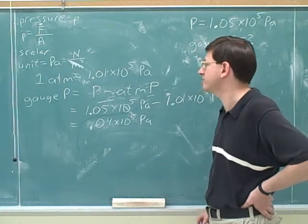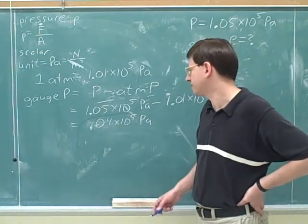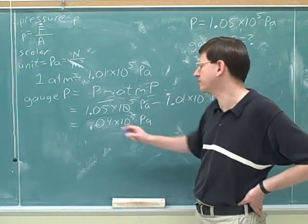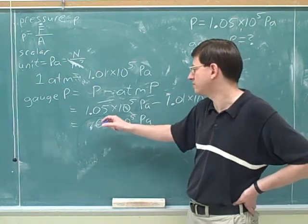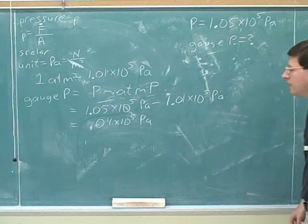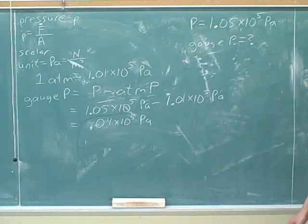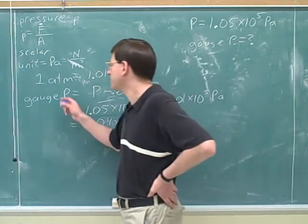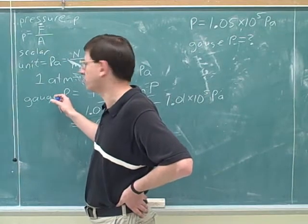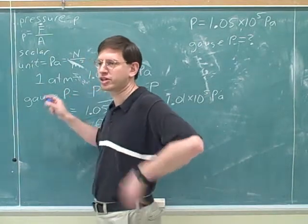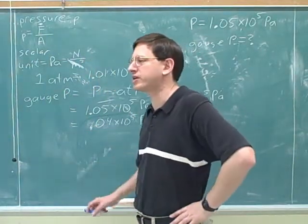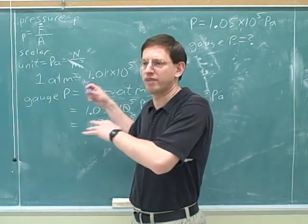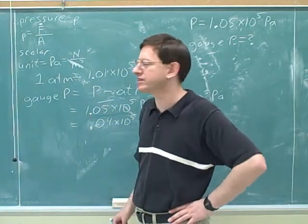The gauge pressure is just the extra pressure that exists above the normal atmospheric pressure. Why is it called gauge pressure? Because that's what normal pressure gauges measure. Pressure gauges don't bother measuring atmospheric pressure, because that's kind of the starting point.